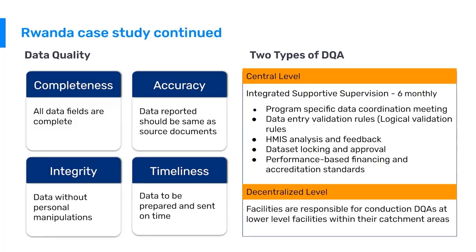At central level, they conduct an internal supportive supervision every six months. The central level reaches out to districts and health facilities, presents data quality validation rules and analysis back to those individuals, reviews data use and HMIS feedback, reviews the process for data set locking and approval, and assesses performance — which is tied to financing and accreditation standards. Supervision support is integral to their routine data quality practices.